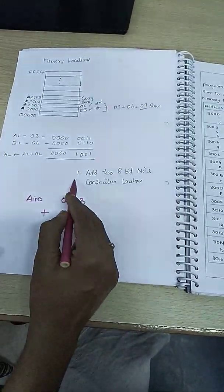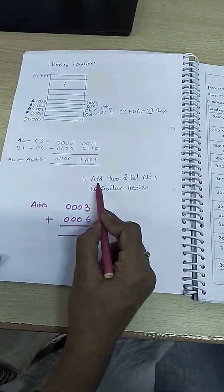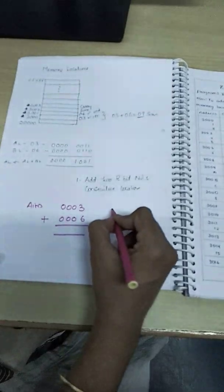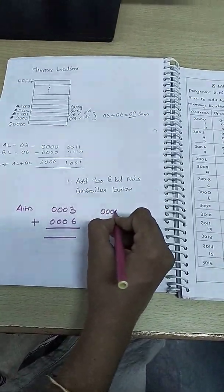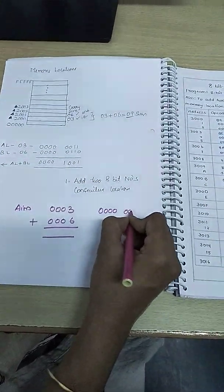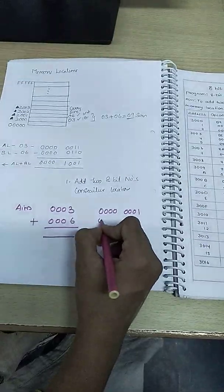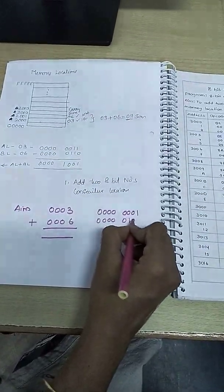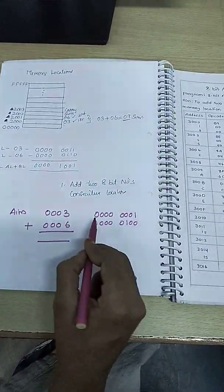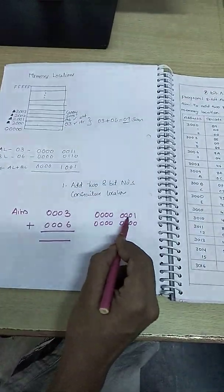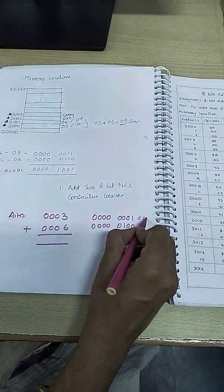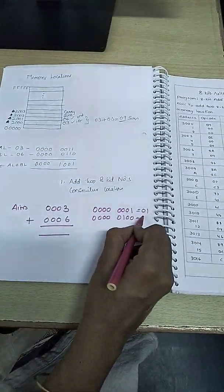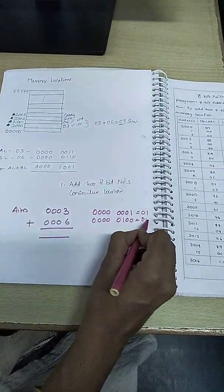Good morning students. Our first program is to perform addition of two 8-bit numbers. Suppose I want to add 00000001 with 00000100. The hexadecimal equivalent of the first 8 bits is 01, and the hex equivalent of the second 8 bits is 04.